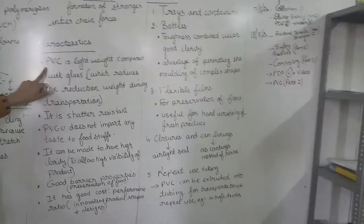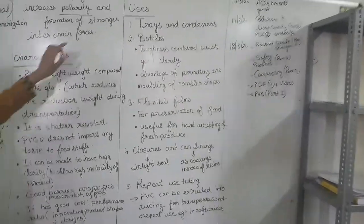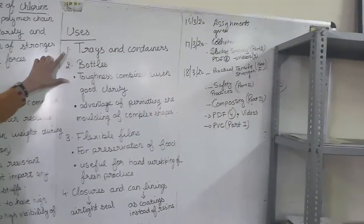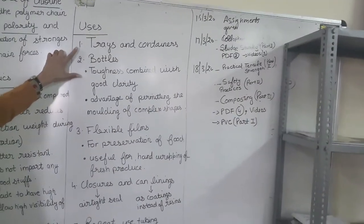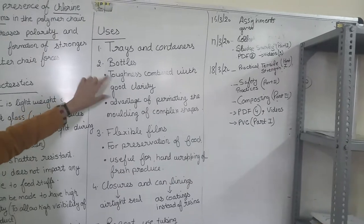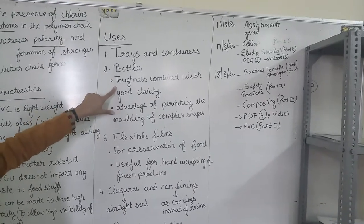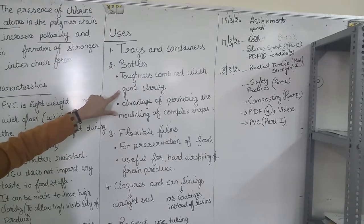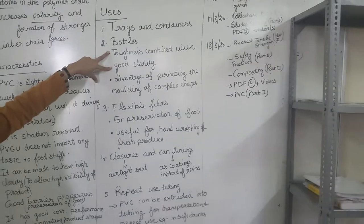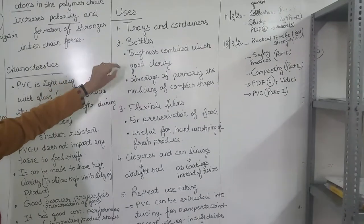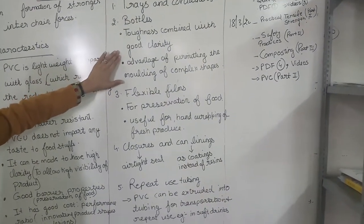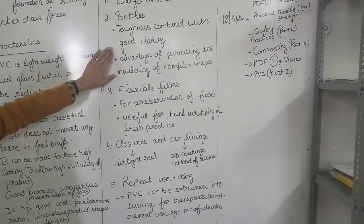Now we come to the uses of PVC. First are trays and containers, as discussed earlier. Second are bottles — toughness combined with good clarity makes PVC suitable for bottles, with the added advantage of permitting the molding of complex shapes.